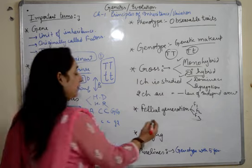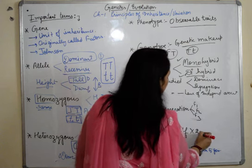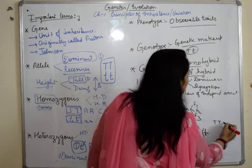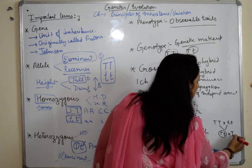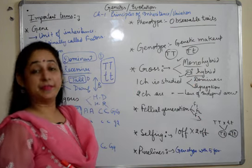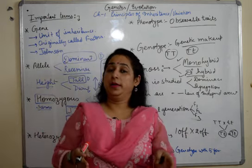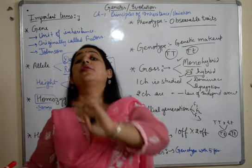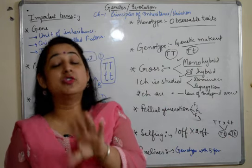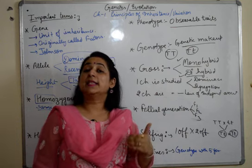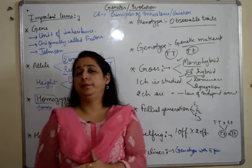Selfing is when one offspring is crossed with the same offspring. The result we get is then crossed again with the same offspring — that is known as selfing. Pure lines are when one type of genotype is crossed with the same genotype for five consecutive generations. After five consecutive generations of such crosses, we get pure lines — where the same genes are maintained from top to bottom.